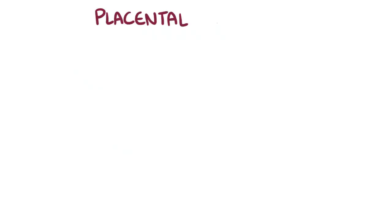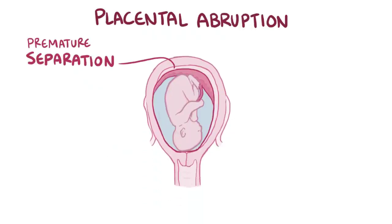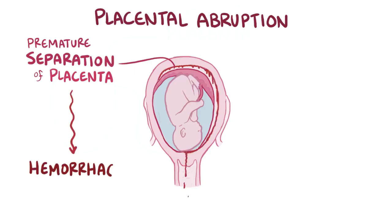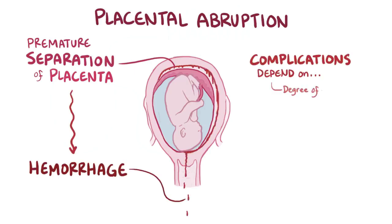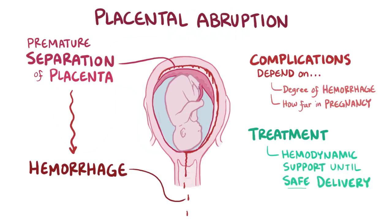As a quick recap, placental abruption is the premature separation of all or part of a normally implanted placenta from the uterine wall, which results in hemorrhage. Complications depend on the degree of hemorrhage and how far along the pregnancy has advanced, and treatment focuses on hemodynamic support until a safe delivery is possible.